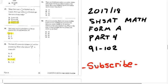Welcome back. Today we are continuing our series on the walkthrough of the 2017-2018 SHSAT Math Form A. This is Part 4. We're going to do questions 91 through 102. Please, if you like the series so far, go ahead and subscribe. And if you do not have a copy of this test, you can look at the description below and download or print a copy for yourself. Alright, let's get started.